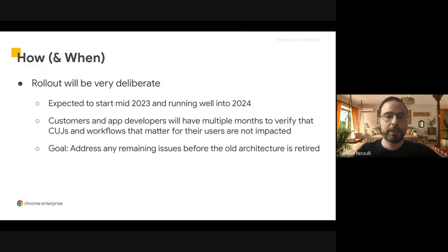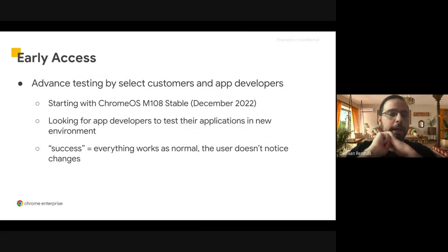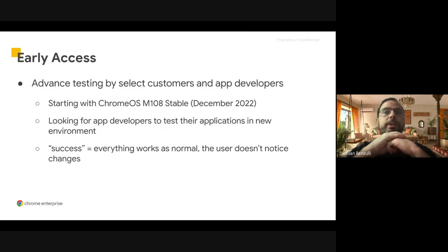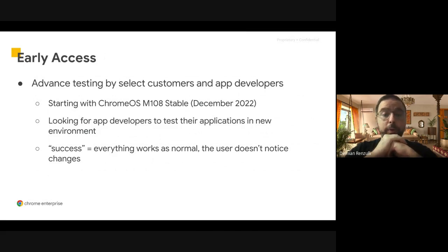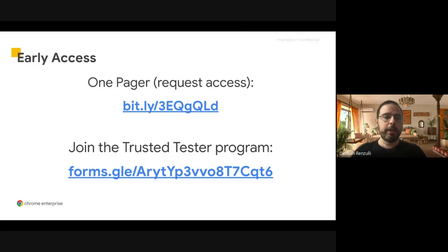This is expected to start by the middle of 2023 and run well into 2024. If you are a customer or app developer, you have multiple months to verify that the grouping is going to work well, and the objective is to address any issues before the old architecture is retired. You will have a developer preview called early access — if you apply, you can start using the new version of the OS to make sure everything works well. This starts this month from December. We are looking for app developers to test this, and success means everything works normally and the user notices nothing. Links are available, including a one-pager and access to the trusted and tested program.